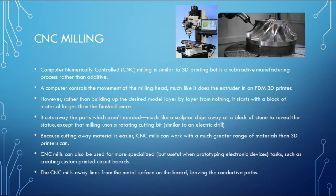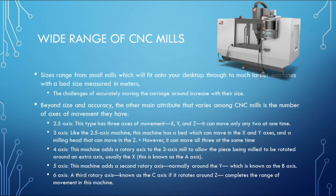CNC (Computer Numerically Controlled) milling is similar to 3D printing but it is a subtractive manufacturing process rather than additive. The CNC part means a computer controls the movement of the milling head, much like it controls the extruder in an FDM 3D printer. Because cutting away material is easier, CNC mills can work with a much greater range of materials than 3D printers. CNC mills can also be used for more specialized tasks like creating custom printed circuit boards. They can often achieve resolutions on the order of 0.001 millimeter, which is a couple of orders of magnitude better than current low-end 3D printers.